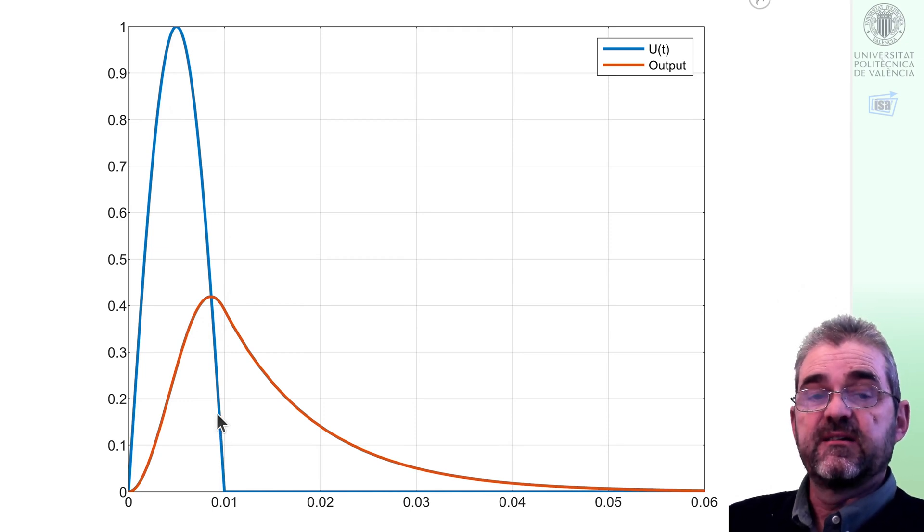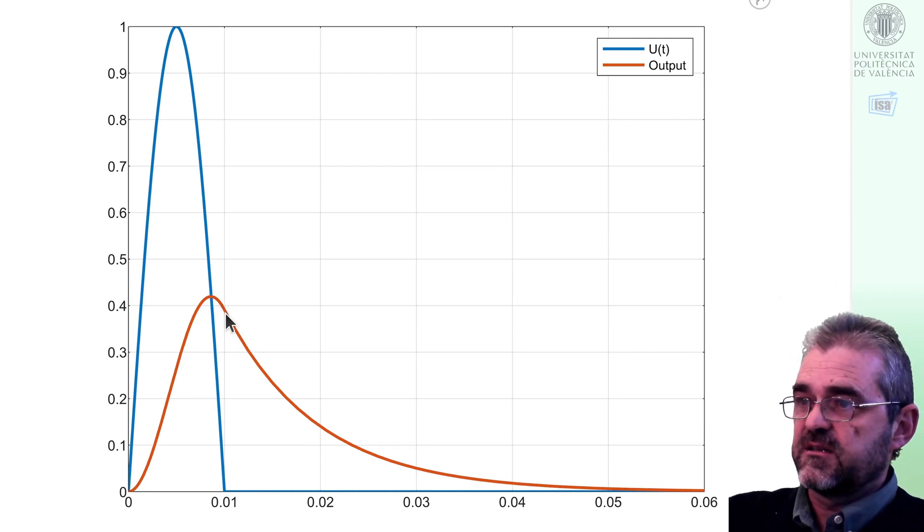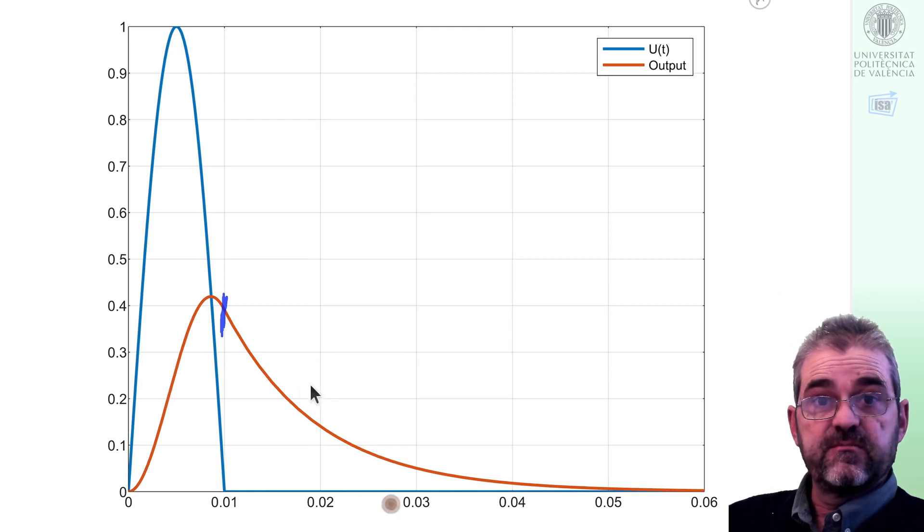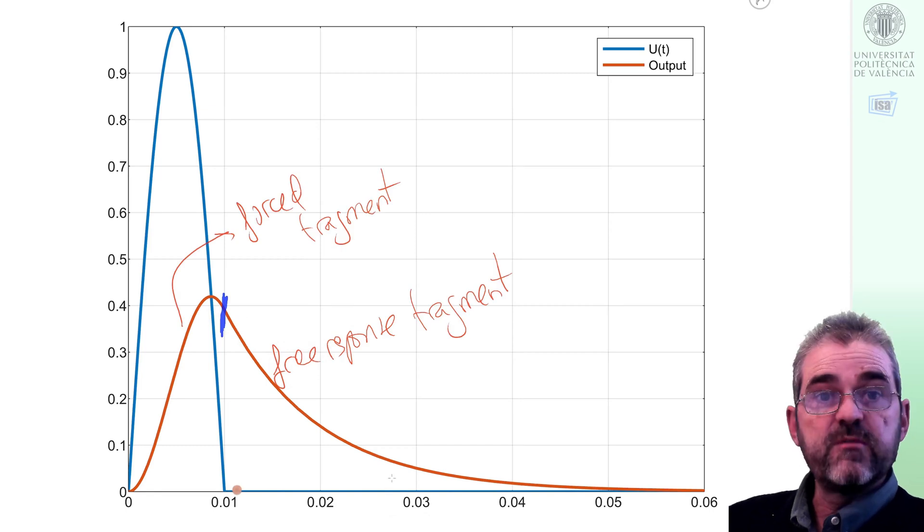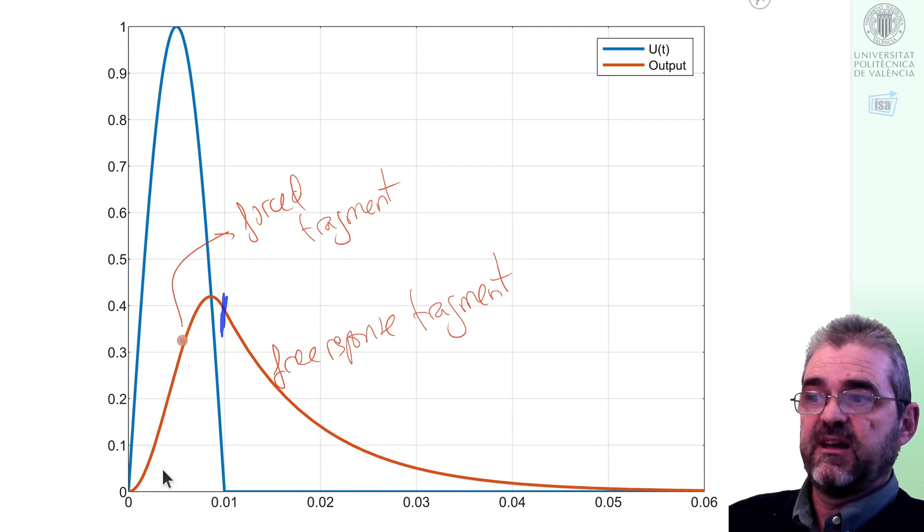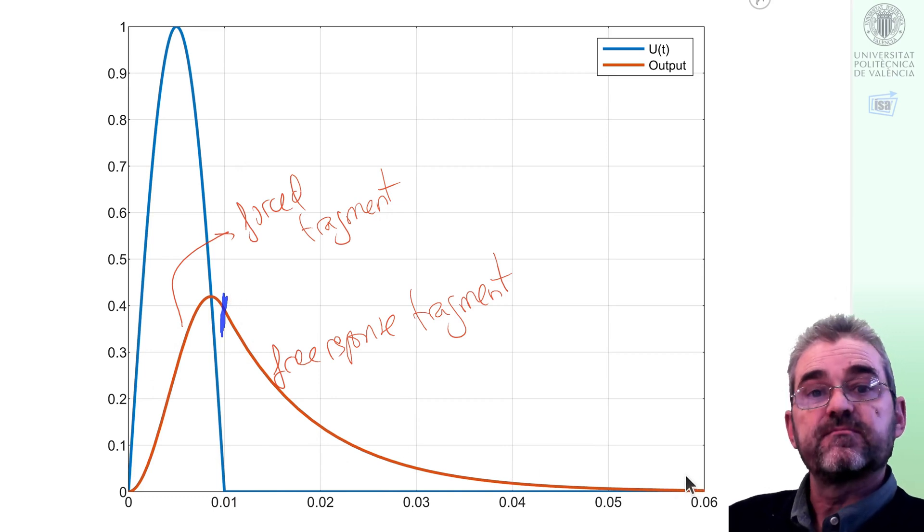Of course if this were a true rectifier with a diode things would be very different. The thing is that also important, we will exploit that fact in a second video with an alternative way of obtaining this solution. From this instant onwards, input is zero, so for sure this will be an exponential free response because I have no input. So this will be an exponential discharge of the capacitor. I will have 0.01 seconds of a forced fragment and then an exponential discharge.